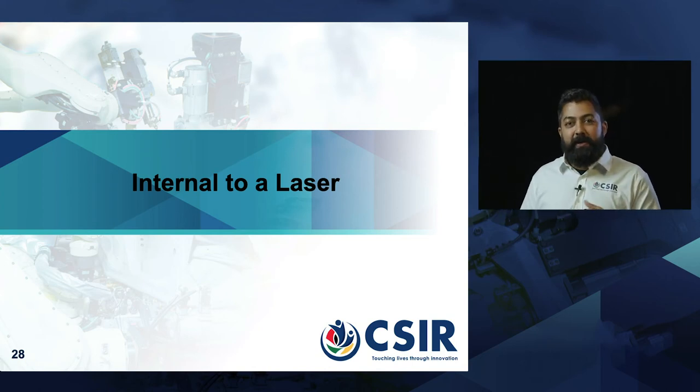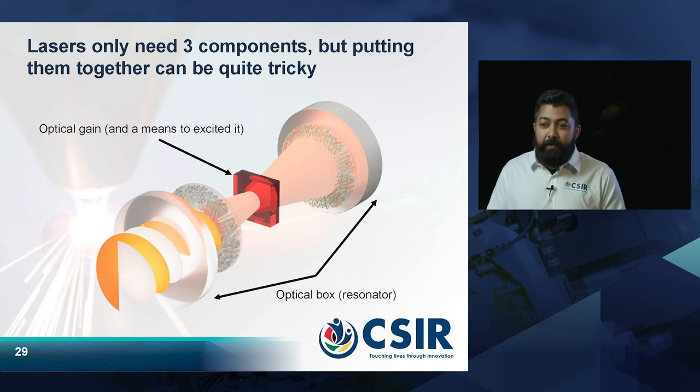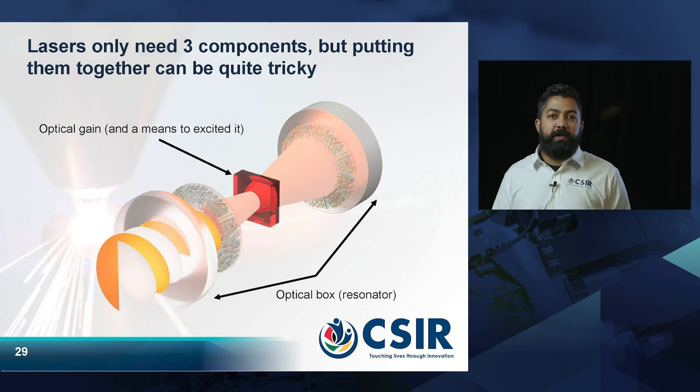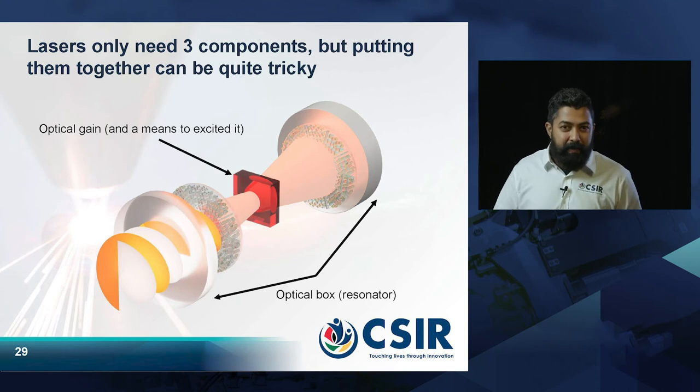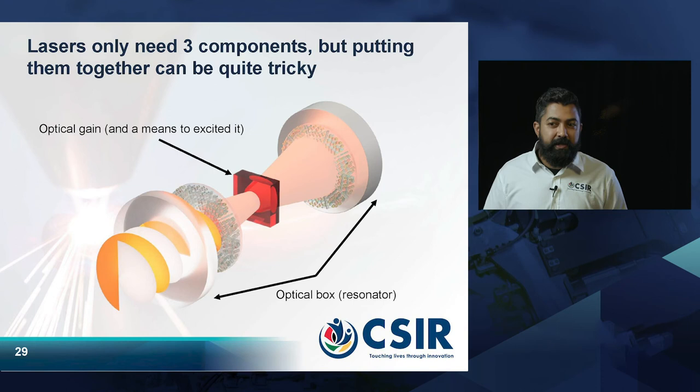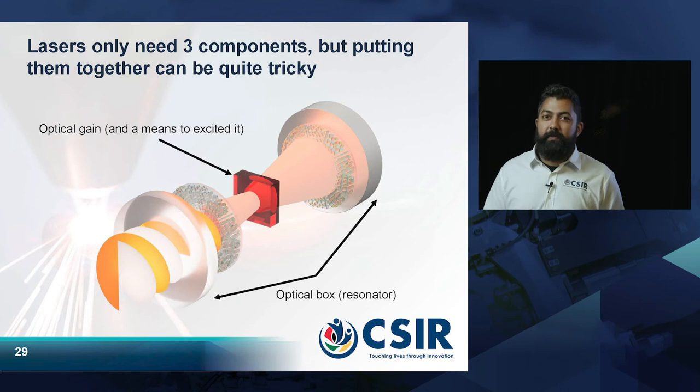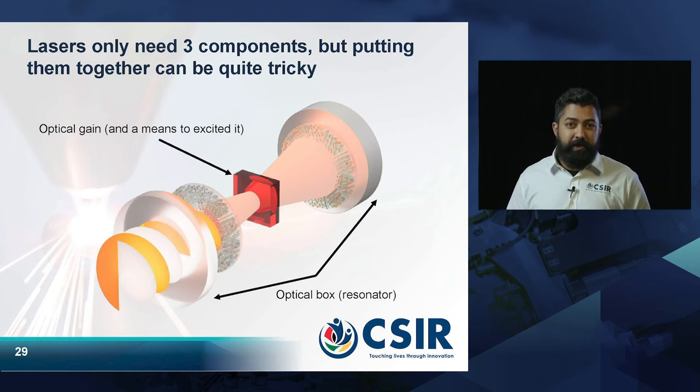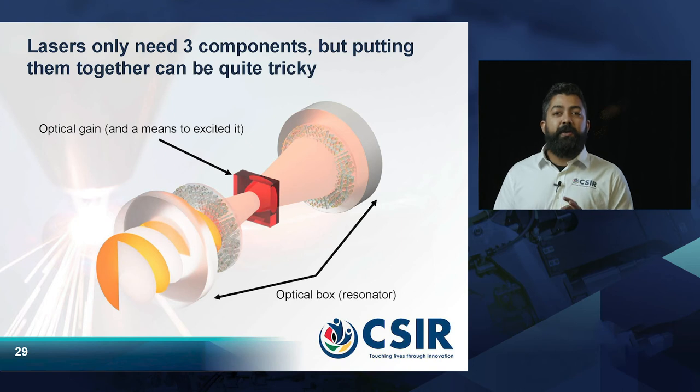Thanks very much, Angela. So I'll be speaking a little bit about how to do beam shaping internal to a laser. Well, for a laser, you only need three things. You need an optical box, a little resonator that comprises of two optical mirrors. Not like the mirrors that you will get in your bathrooms, but actually these are very highly specialized mirrors that reflect only a single color or wavelength of light. You'll need an optical gain medium. This is what is used to create those different wavelengths of light. And you'll need a means to excite it. But one of the easiest ways of doing beam shaping inside lasers is to use an aperture inside the lasers.